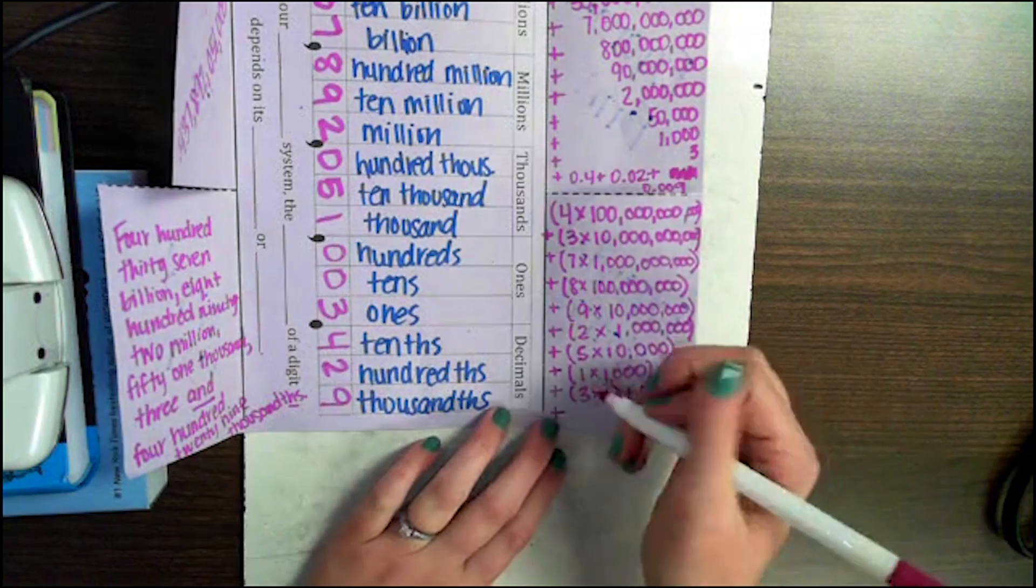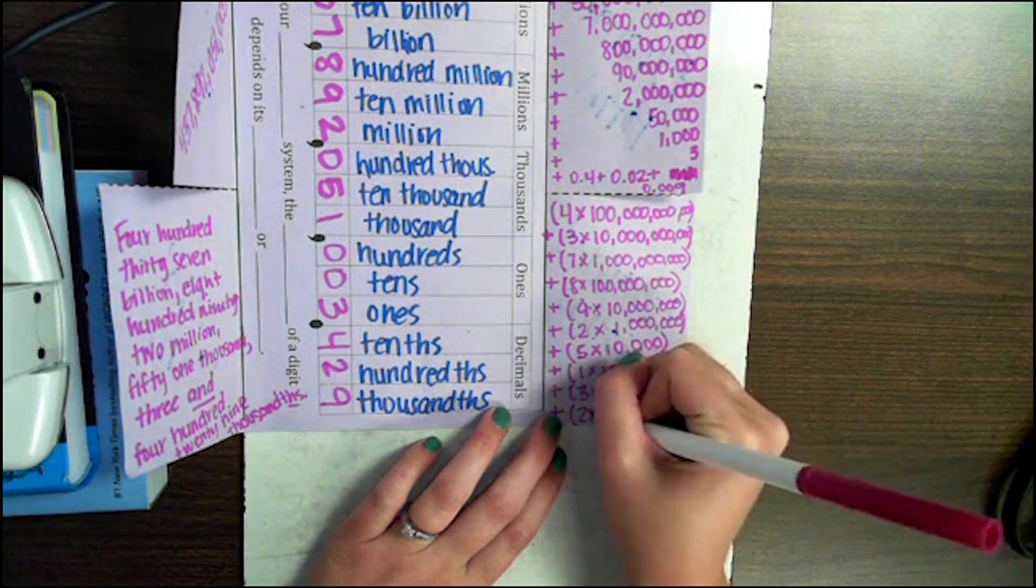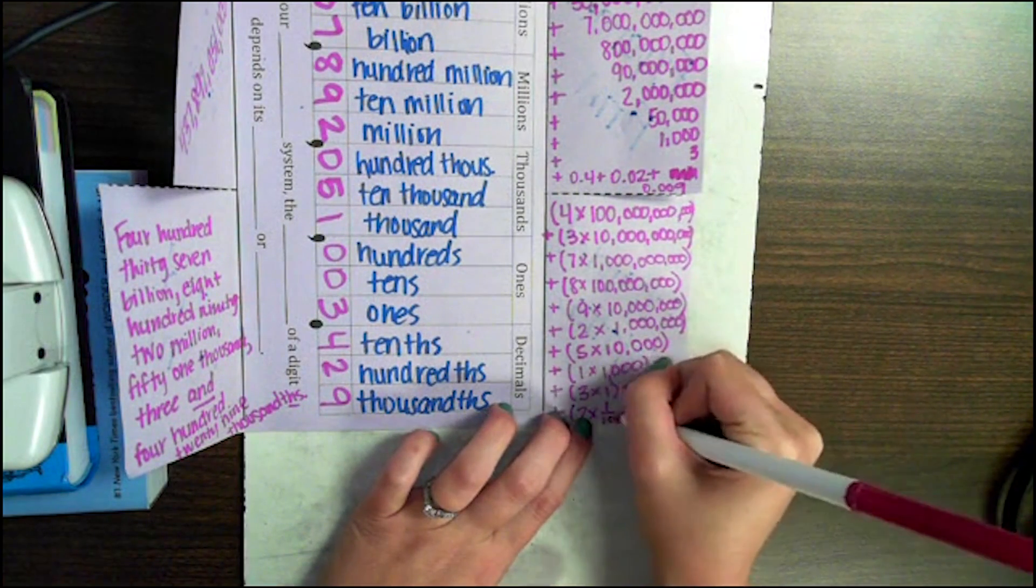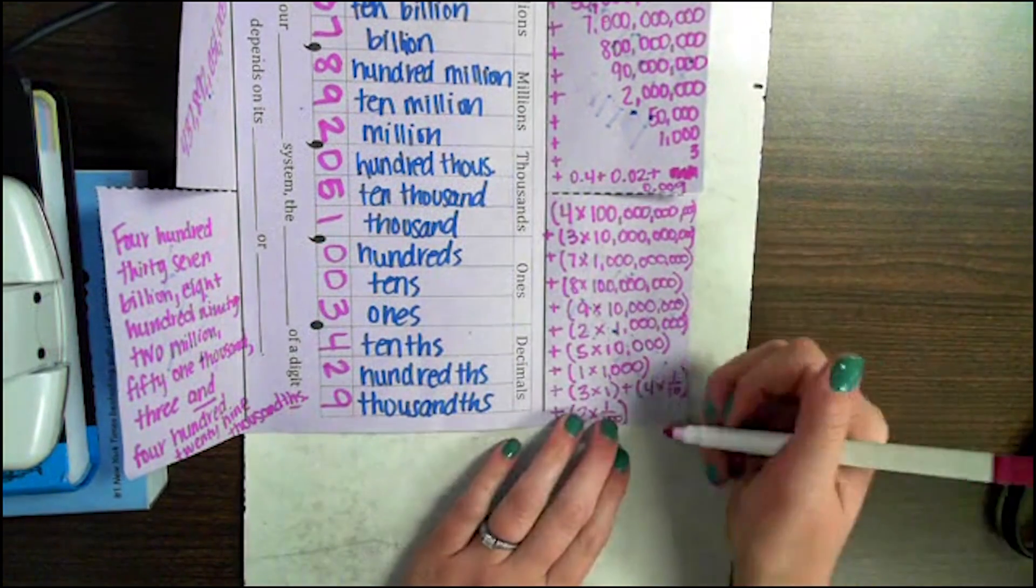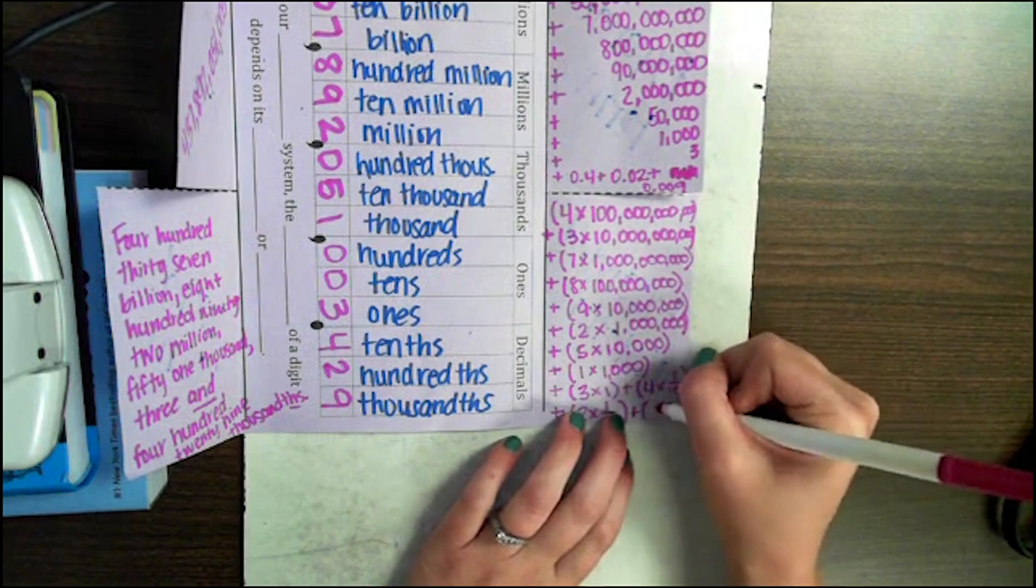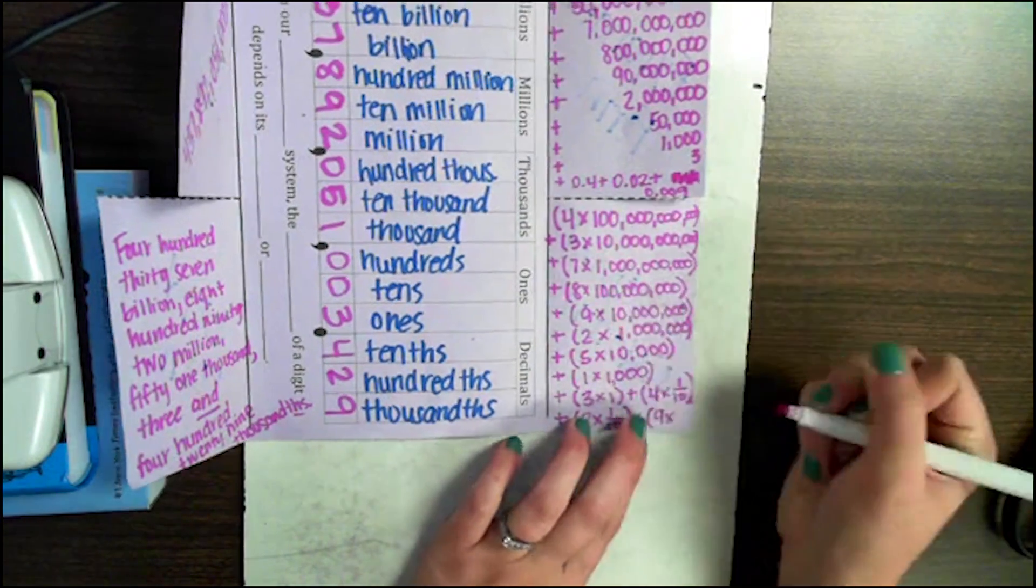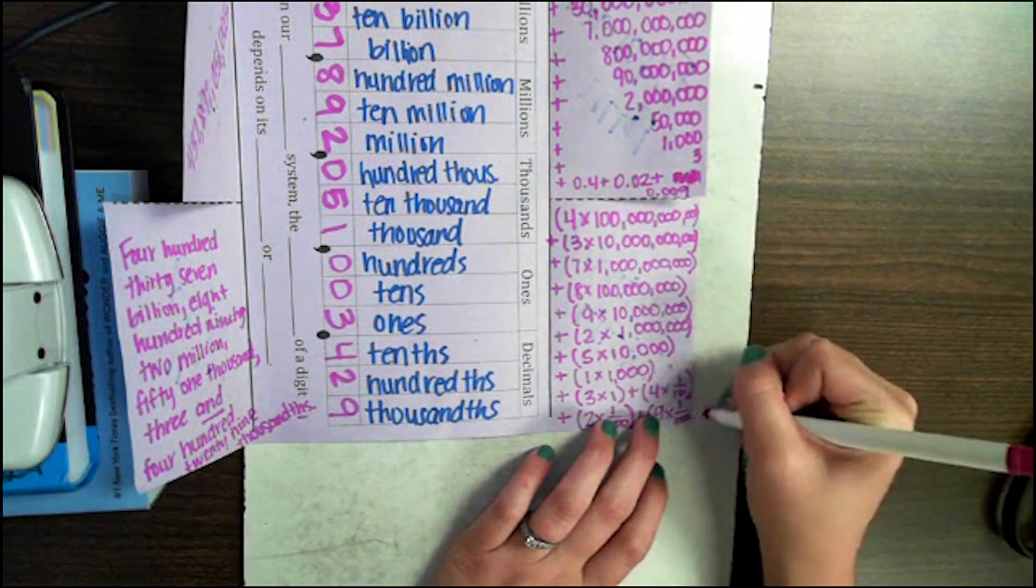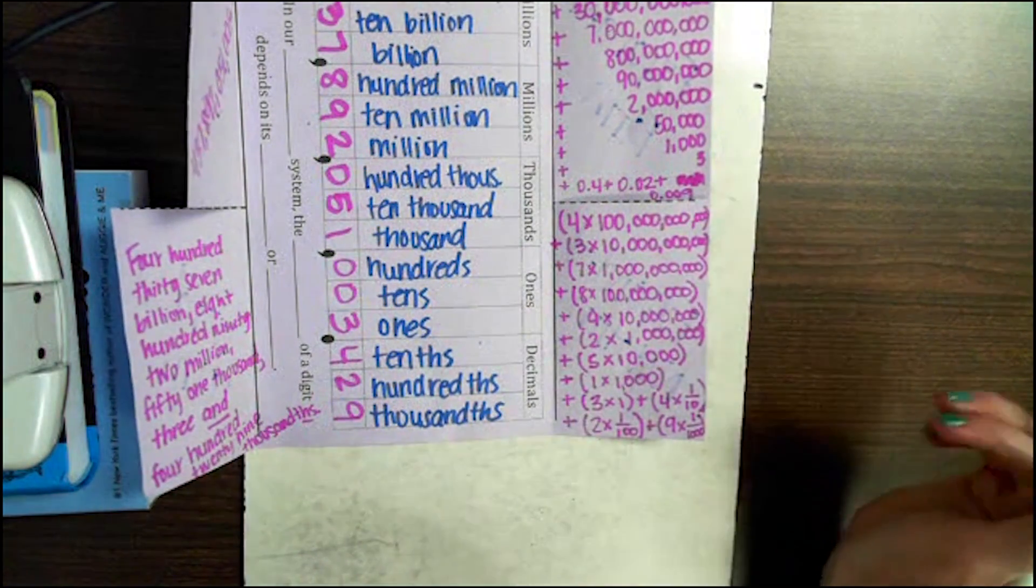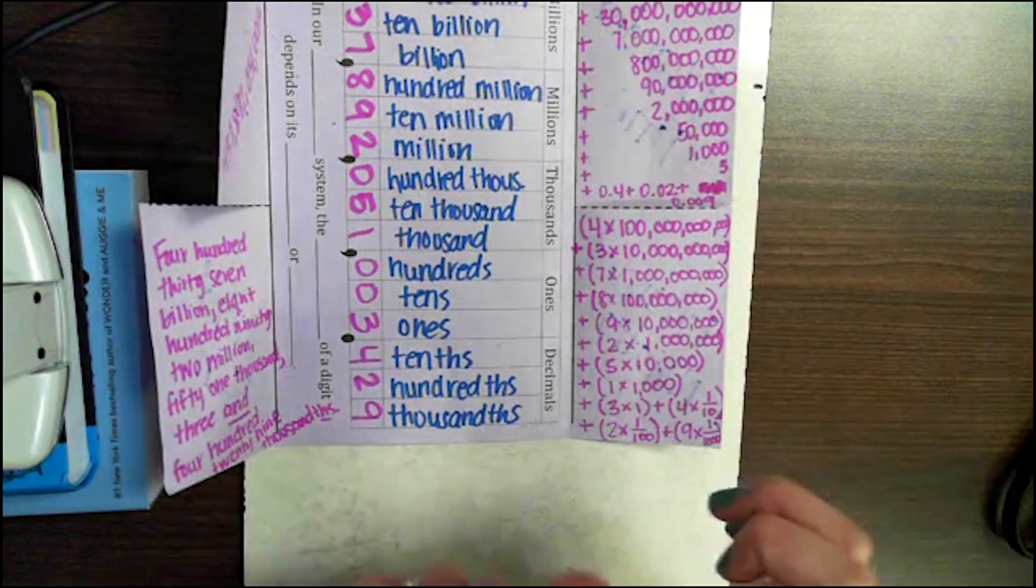My 2 is in the hundredths place, so this is going to be 2 times 1 hundredth. And then the 9 is in the thousandths place, which is going to be 9 times 1 over 1,000. That was just enough room.